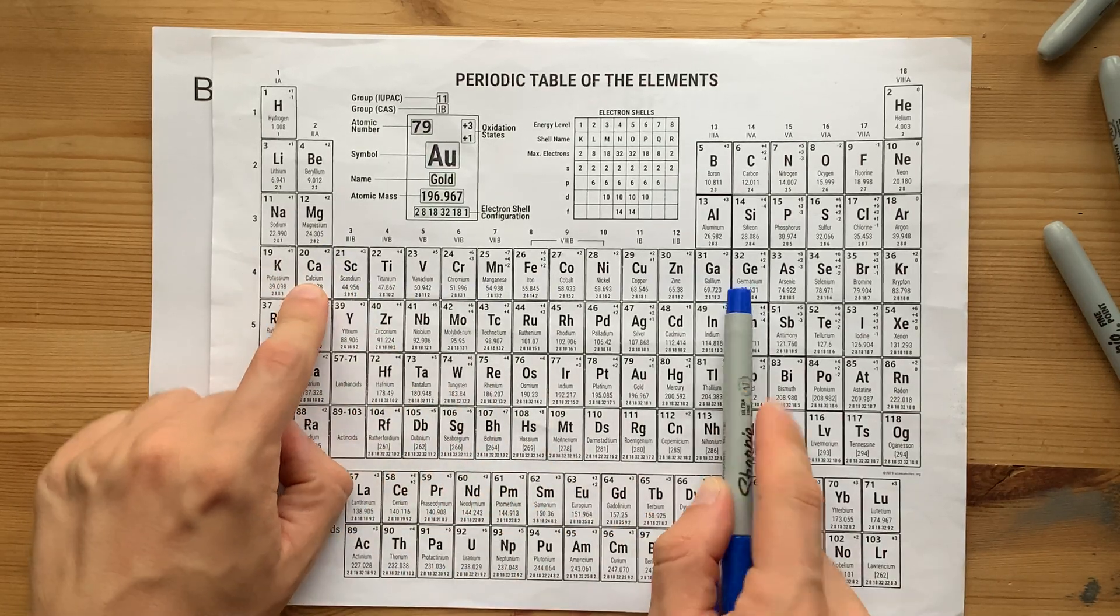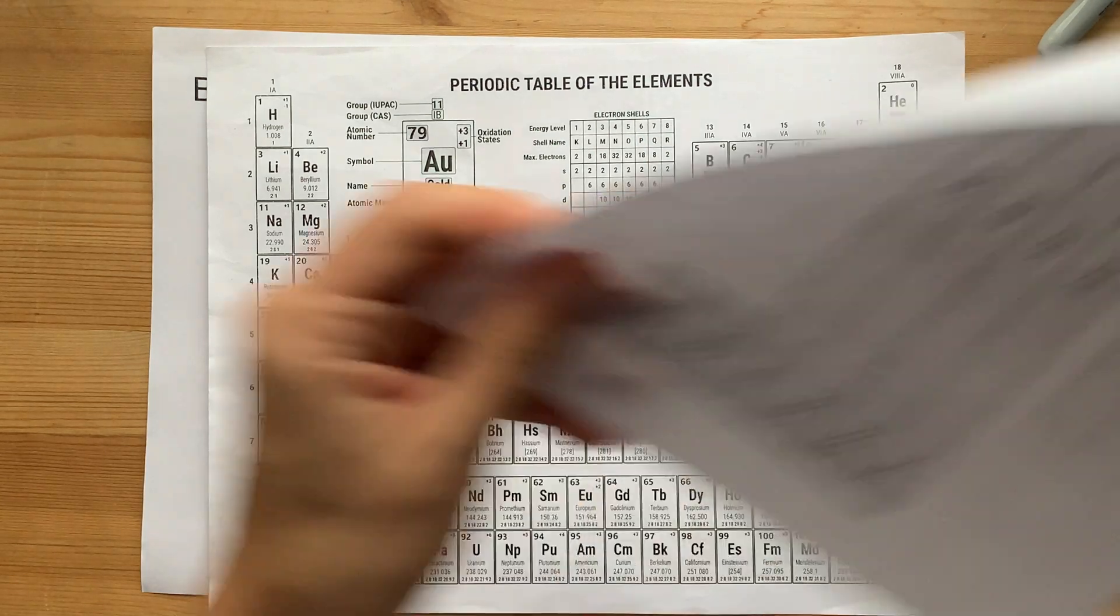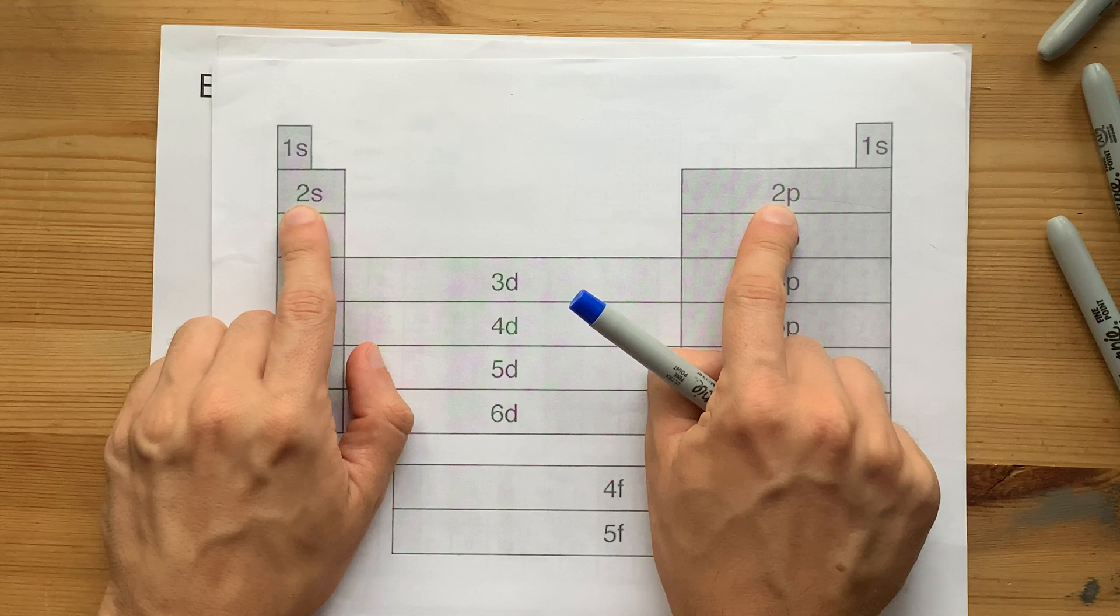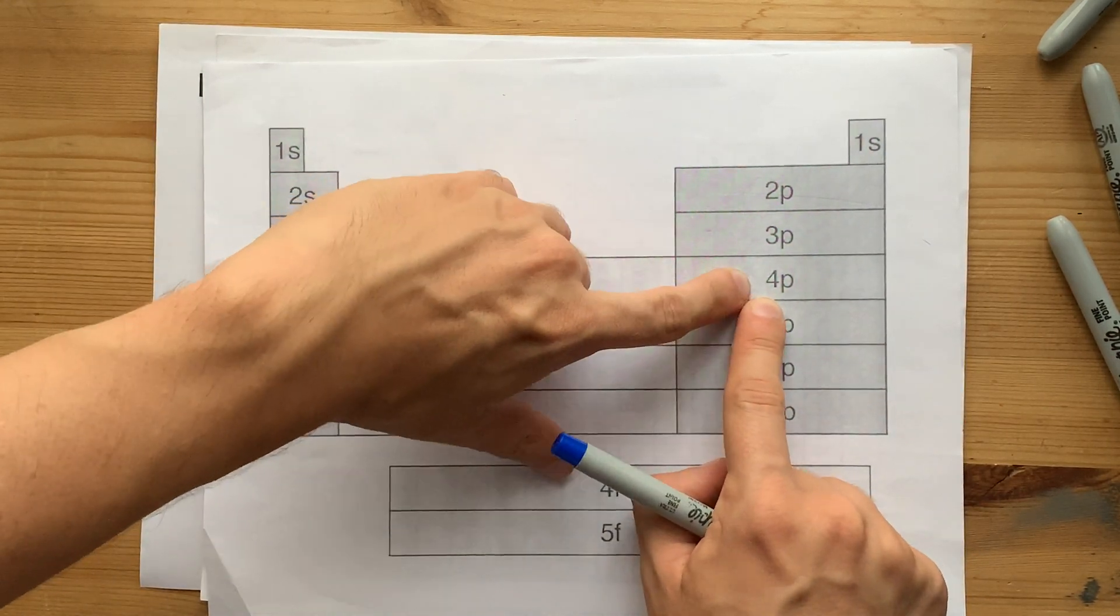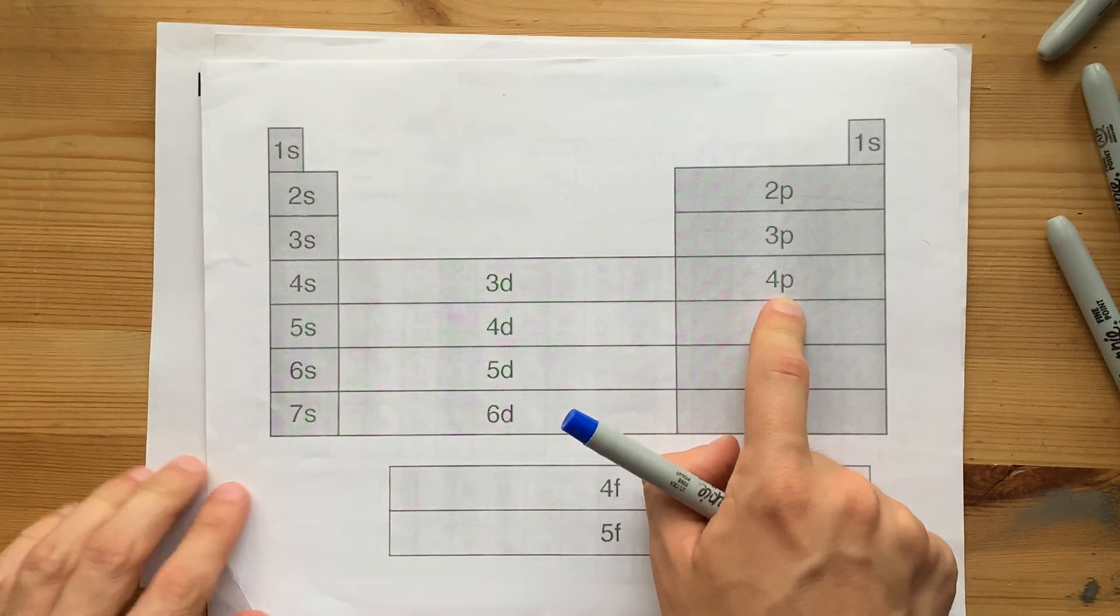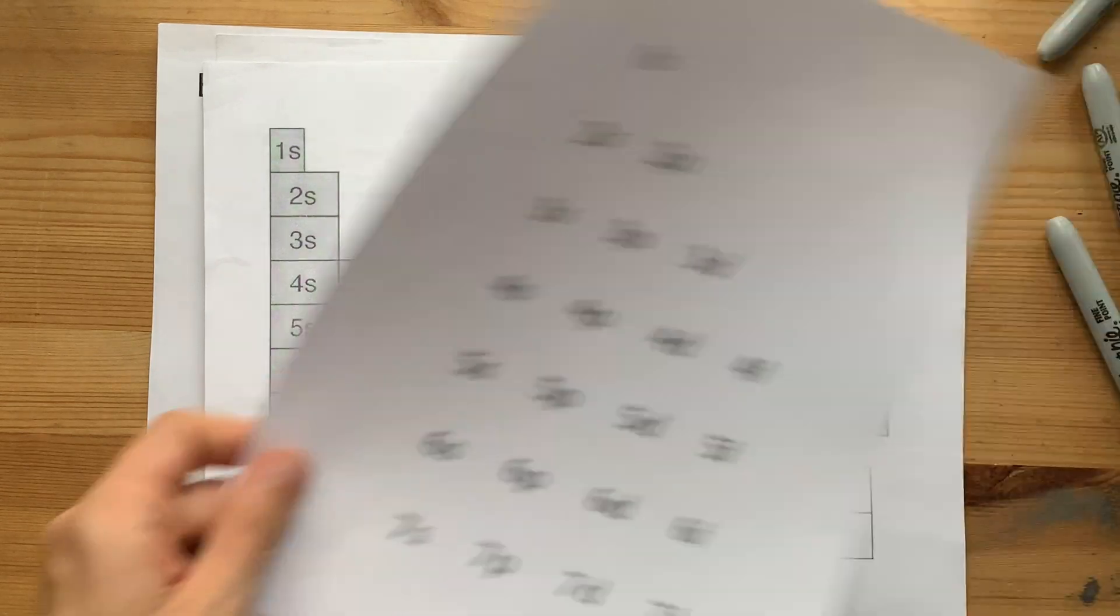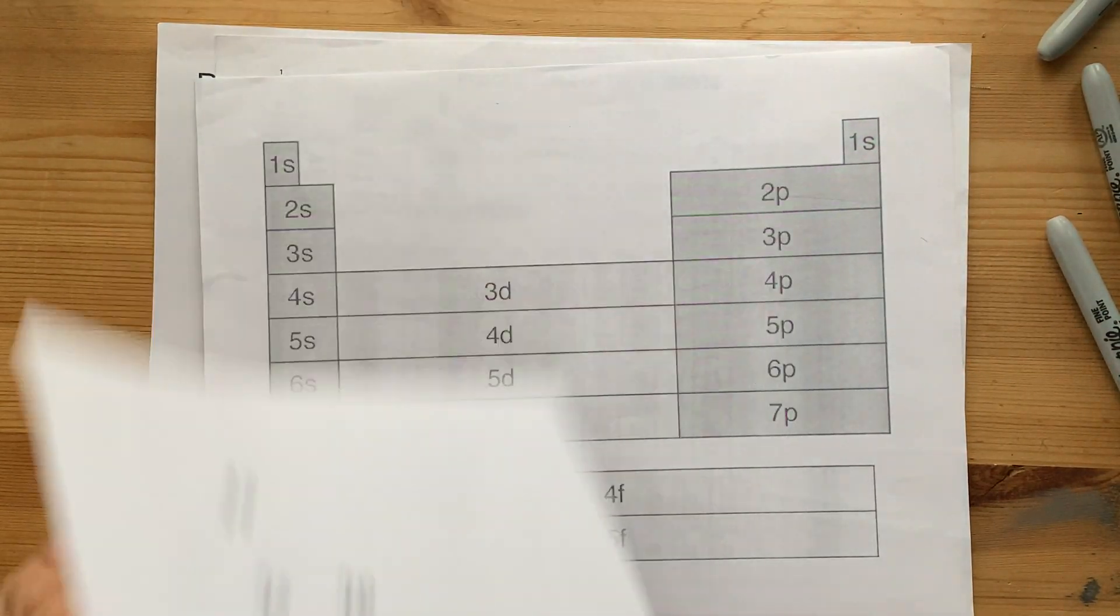After calcium, things get complicated. You have to go back and forth from one shell to another, as shown in this diagram. First shell, second shell, third shell, fourth shell, back to the third, then you re-add more to the fourth. You go along. This is called the order of filling, that your teacher might have shown you with some kind of diagonal diagram like this one.